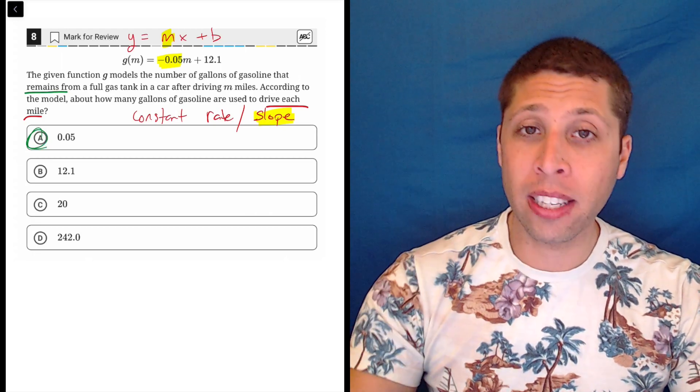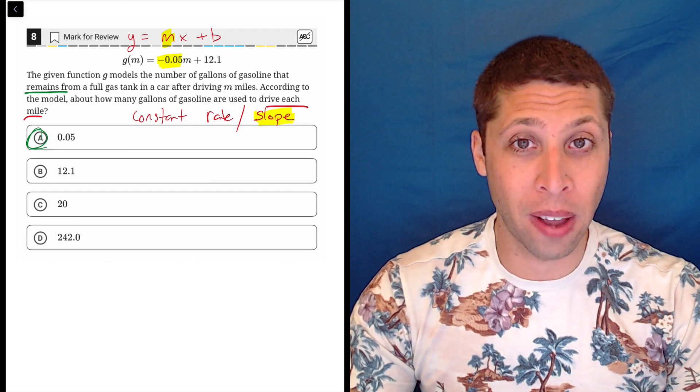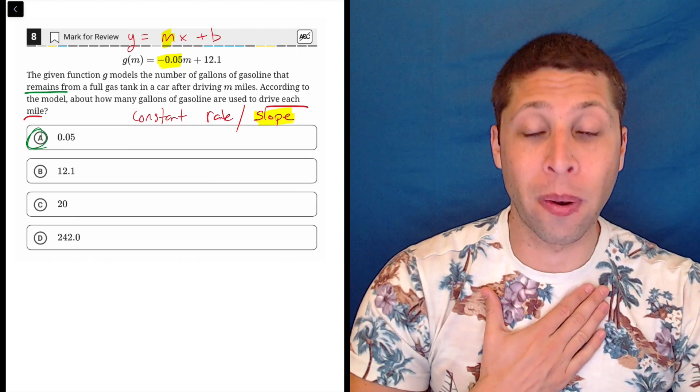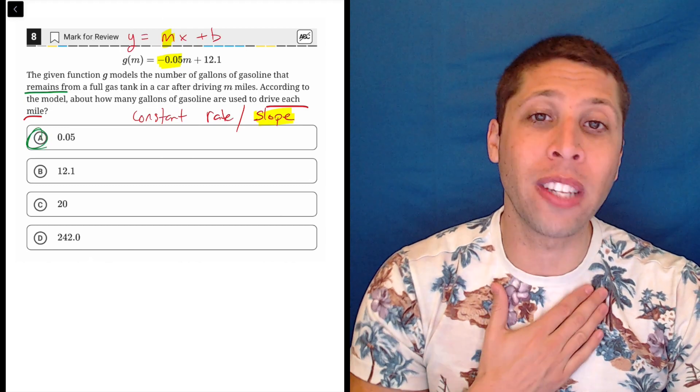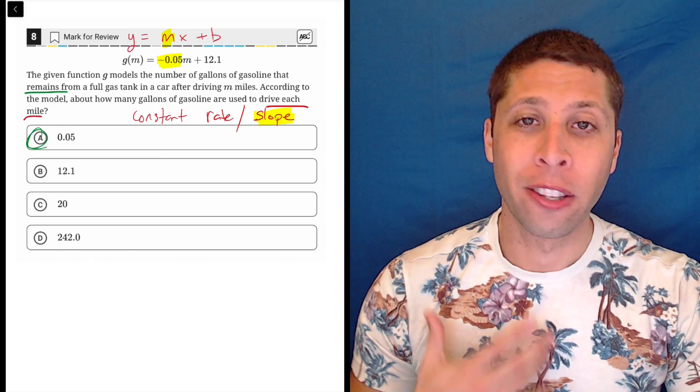So that's why we need to have perfect confidence here. It is maybe middle difficulty in terms of how the SAT thinks of things. But in terms of how I think of things and how you should think of things, this is one of the easiest questions you can see because it's basically just a vocabulary question.